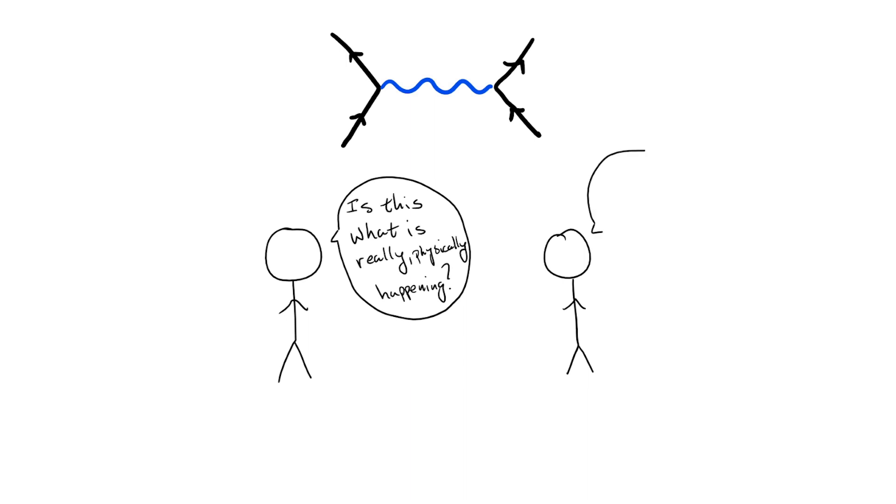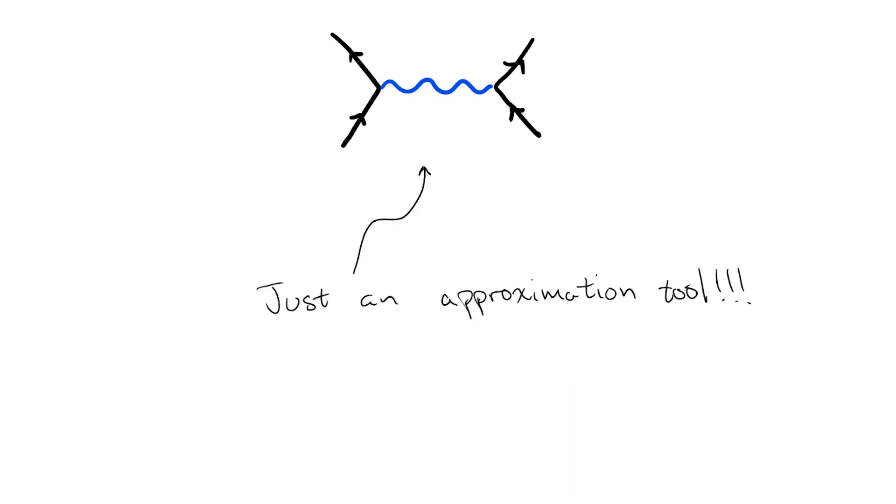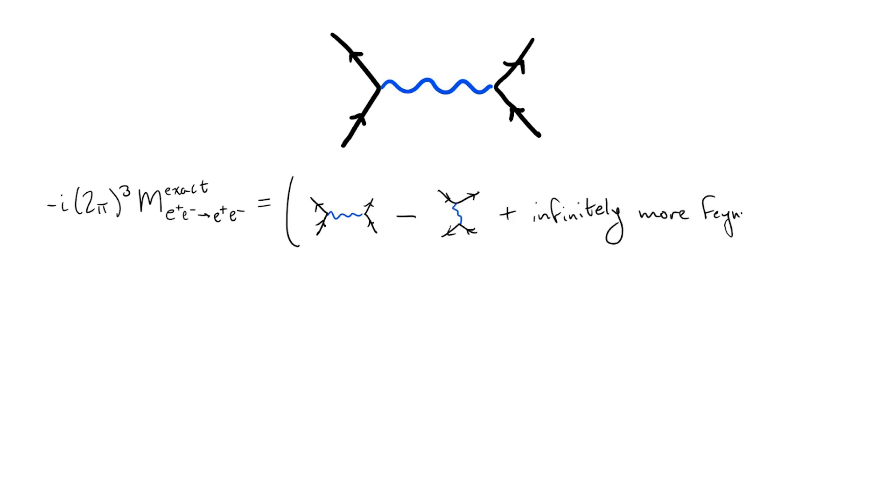Well, we probably shouldn't. Here's why. Remember that perturbation theory, and therefore the use of Feynman diagrams, is really just an approximation tool. So, unless we calculate all the infinite number of Feynman diagrams, we're never going to be able to exactly describe what's happening in nature.